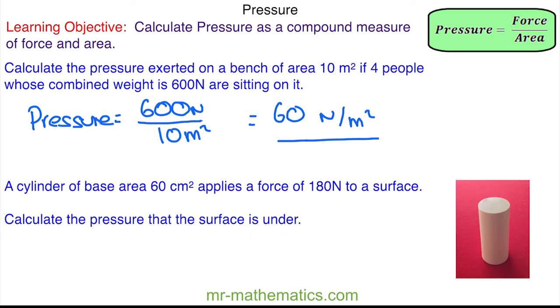Again, we have the pressure which is equal to the force of 180 N divided by 60 cm². So the surface is under 3 N per centimeter squared of pressure, and the newtons and centimeters squared are our units.